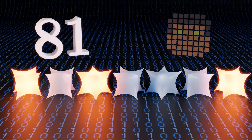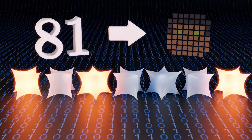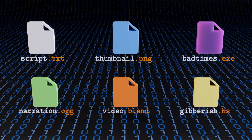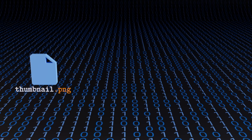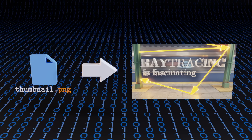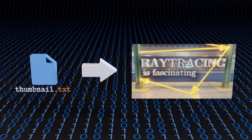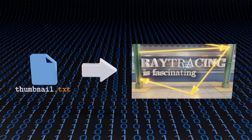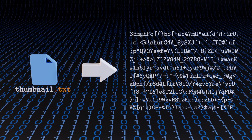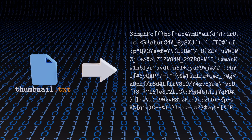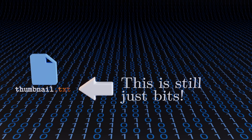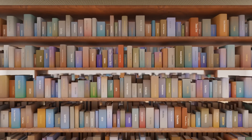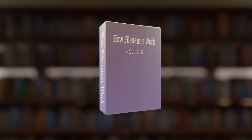This means that a computer needs to keep track of what kind of data some series of bits embodies. One popular technique is file extensions. For example, the bits in script.txt should be interpreted as text, while thumbnail.png should be interpreted as an image. If you wanted, you could rename a .png file to a .txt file, causing the computer to reinterpret the same bits as text instead of an image. But this doesn't really explain our question — after all, how does the computer know to interpret the file name as a piece of text? This brings us to another popular way to do it: have it baked into computer instructions.